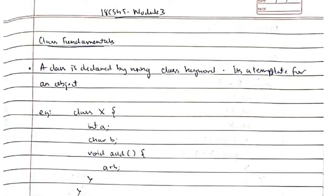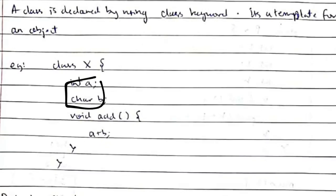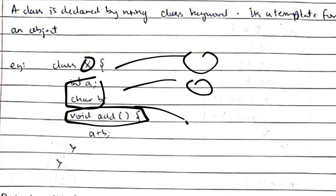Today we will be discussing the third module of object-oriented concepts. It's a very small and easy module. Let's get started with the first topic: class fundamentals. In a class you need to know two things — a class has some variables and functions, and it has a name by which you can create different objects and initialize values for those objects.